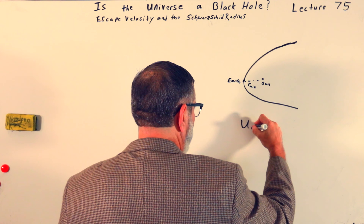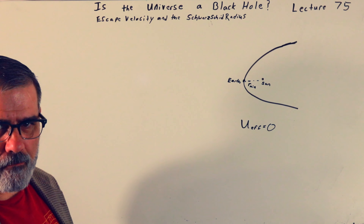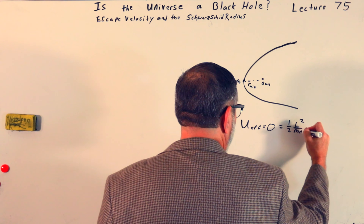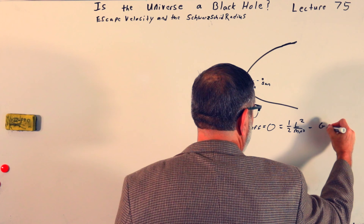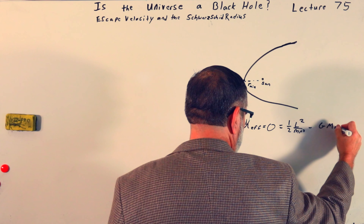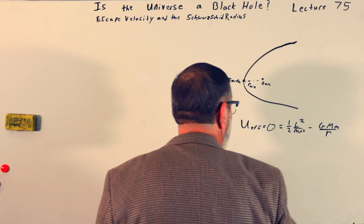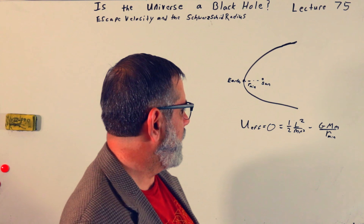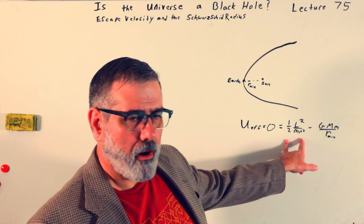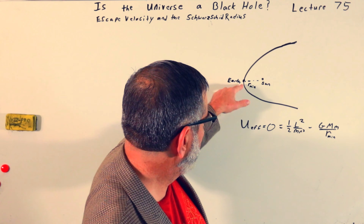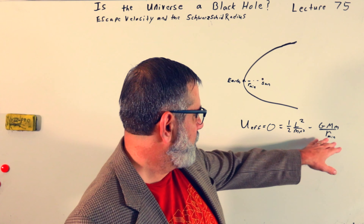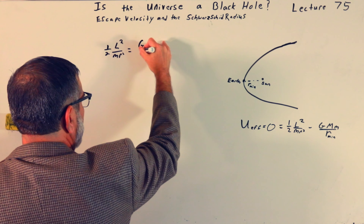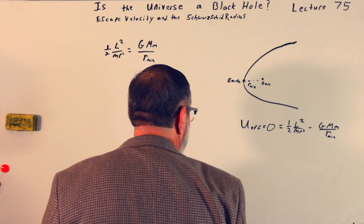Recall that under the condition that the effective potential is equal to zero, we get these parabolic orbits. The effective potential is: one-half l² over mr² minus GM·m over r. Setting this equal to zero, we get that one-half l² over mr² equals GMm over r_min. Recall that l = mr²ω, so substituting and squaring: m²r⁴ω² over mr² equals GMm over r_min. After cancellation we get mr²ω² = GMm over r_min.